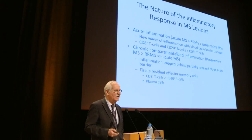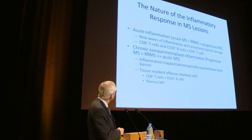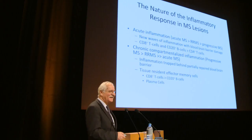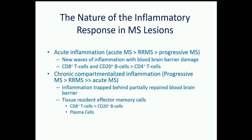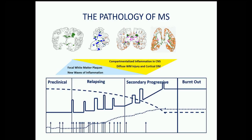Two types of inflammation exist in the MS brain: acute waves of new inflammation — corresponding clinically to disease activity — characterized by CD8 T cells and B cells entering the brain, causing blood-brain barrier damage and focal lesions; and compartmentalized inflammation from T and B cells retained in the CNS as tissue resident memory cells, responsible for slow lesion growth, diffuse damage, and cortical pathology.